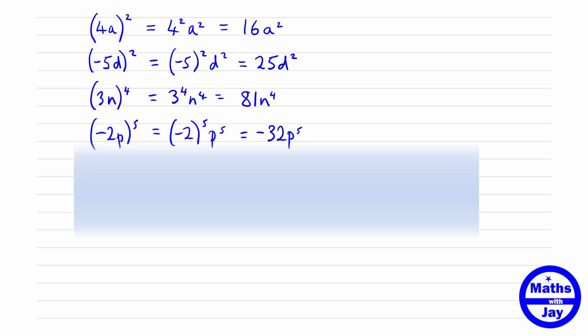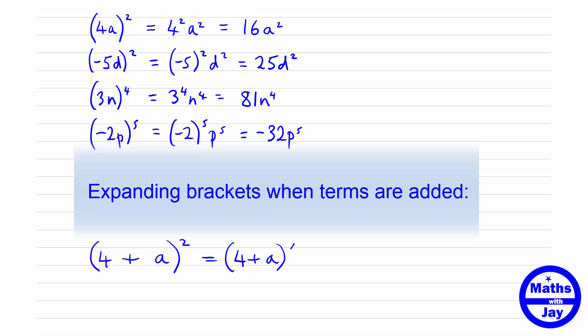The really important thing is not to mix these up with something like this. The first one we had was (4a)², which is not the same as (4+a)². I'm going to write it out very clearly. (4+a)² would be (4+a) times (4+a).